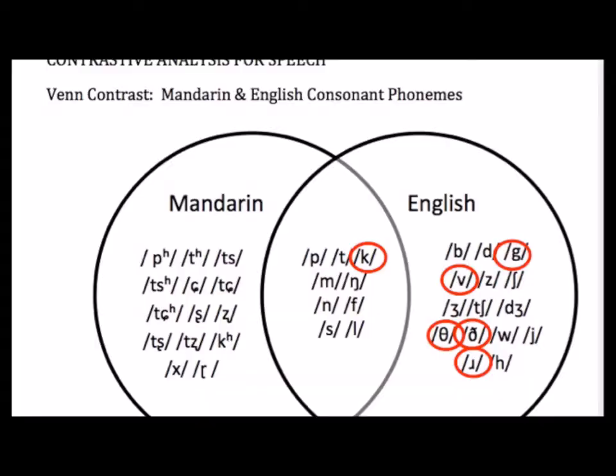The next step is I'm going to take these errors and plot them onto our Venn diagram. You can see here that most of these errors are falling on the English-only side — sounds that only occur in English. Given that Alice is a native speaker of Mandarin who's learning English as her second language, these are not going to be a concern for us.